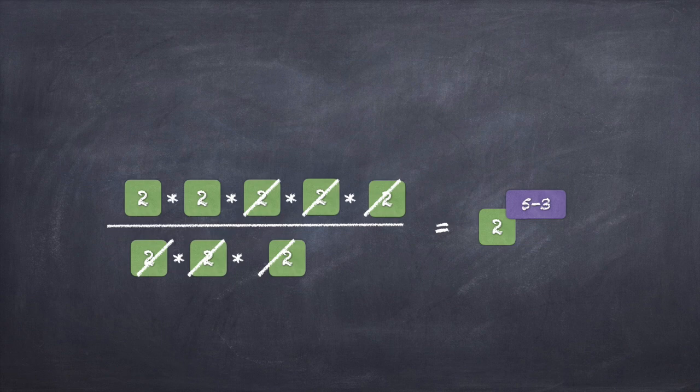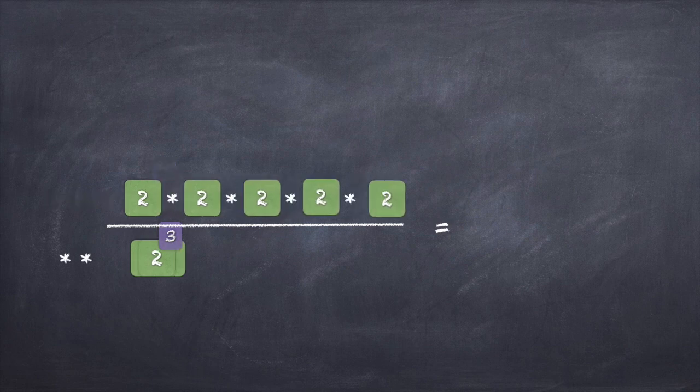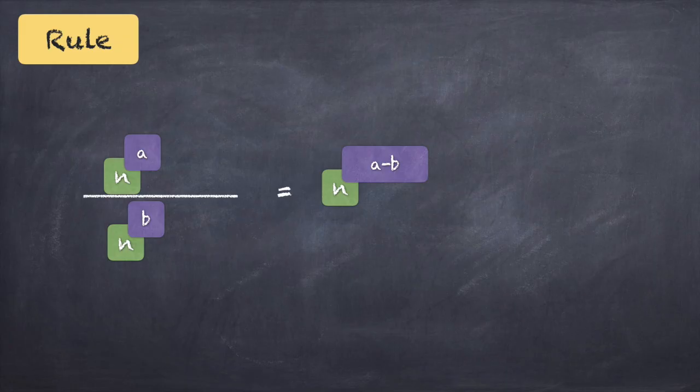We can also get this directly from the formula: 2 raised to 5 minus 3 gives 2 raised to 2. Or we can understand it step by step: there were five 2s on top and three 2s on the bottom; the three 2s on the bottom cancelled three on top, leaving two 2s.